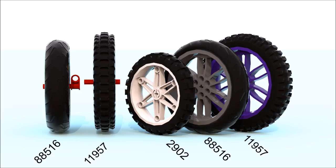2902 has kind of like a checkered pattern on it, and this also doesn't really do much in terms of traction. Now, 11957 came from an off-road motorcycle Lego set, and so predictably, it has a much more aggressive tread pattern on it, with big knobby wheels.